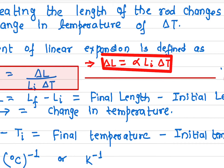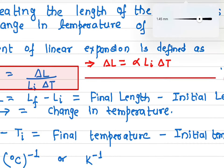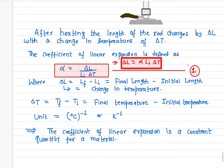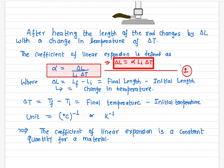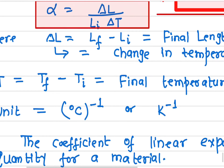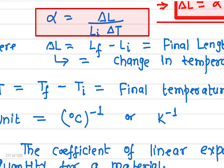If we know the coefficient of linear expansion, and we know the length and the change in temperature, we can calculate the change in length. For most materials, this coefficient is constant, and it is listed — you can find it by searching online or in a textbook. The delta L has units of length, and since the original length also has units of length, those cancel dimensionally.